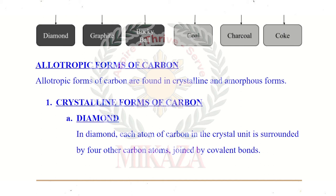The crystalline form, number one type, is diamond. In diamond, each atom of carbon in the crystal unit is surrounded by four other carbon atoms joined by covalent bonds. So each carbon atom completes its valence by bonding with four other carbon atoms.